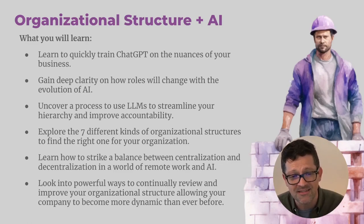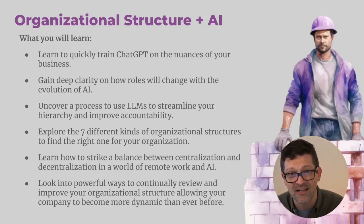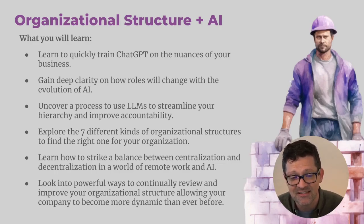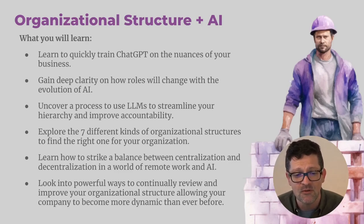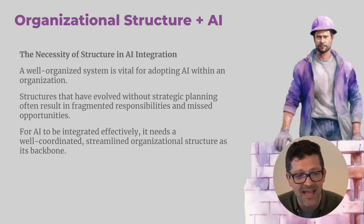We're going to uncover a process to use LLMs to streamline your hierarchy and most importantly improve accountability. We're going to look at the seven different organizational structures and find the right one for your organization, learn how to strike a balance between centralization and decentralization, and look at powerful ways to continually review and improve your organizational structure, allowing your company to be more dynamic than ever before with the power of AI.